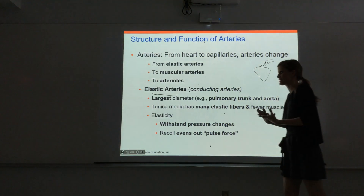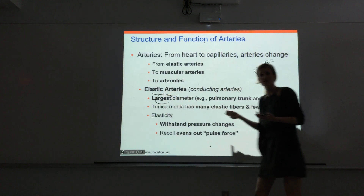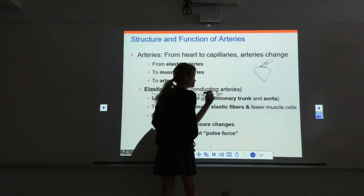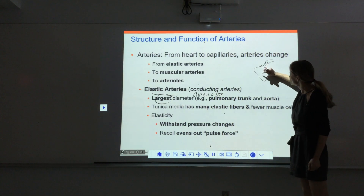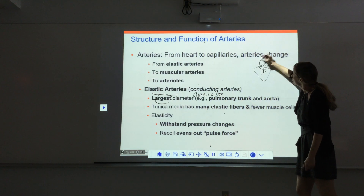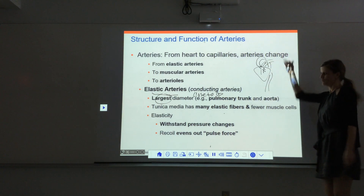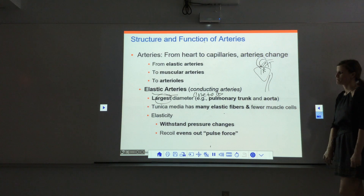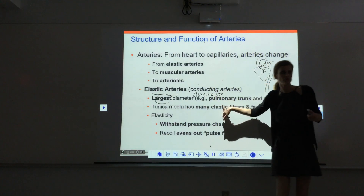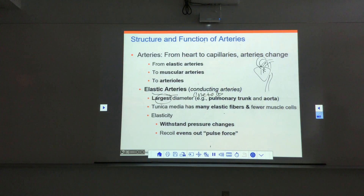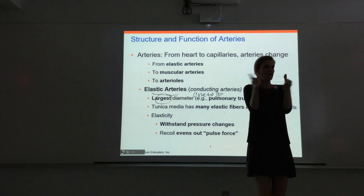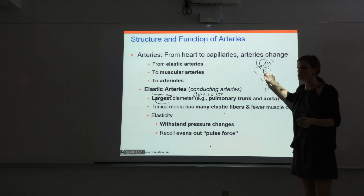We call them elastic arteries because they have more elastic fibers and fewer smooth muscle cells — they're very stretchy and elastic. These are the largest diameter vessels, closest to the heart. Examples include the pulmonary trunk, which takes blood out from the right ventricle, and the aorta, which takes blood out of the left ventricle down the thoracic cavity and abdomen.